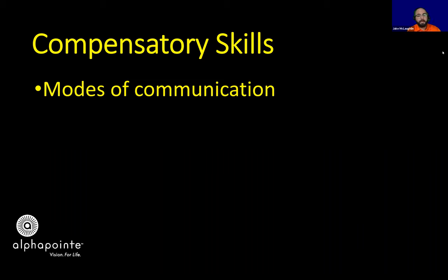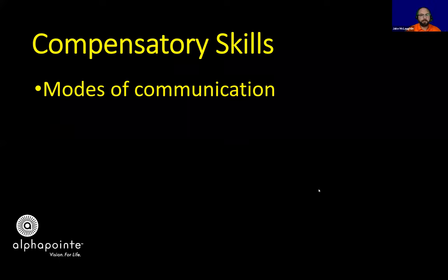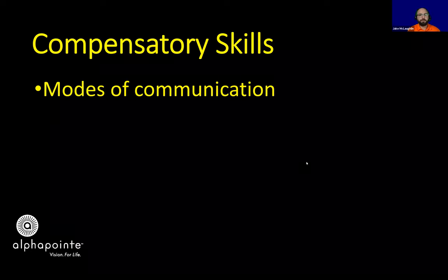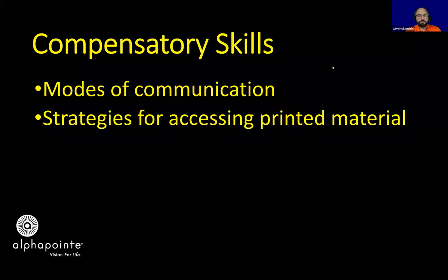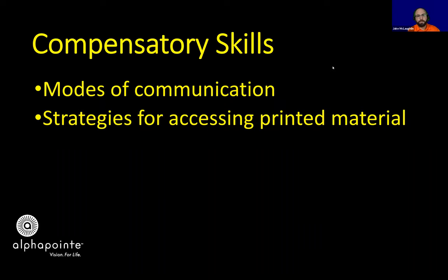Active listening and speaking depend on what type of format or audience is being engaged. For example, speaking to a professor versus a peer might be more formal versus casual. It's all verbal types of communication and listening skills. The next area is strategies for accessing printed material, which encompasses large print, braille, audio recordings, having a reader or scribe — the different types of formatting to accommodate the needs of an individual who is visually impaired or blind.